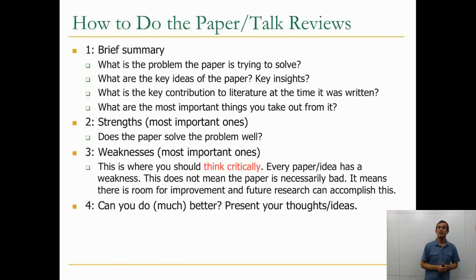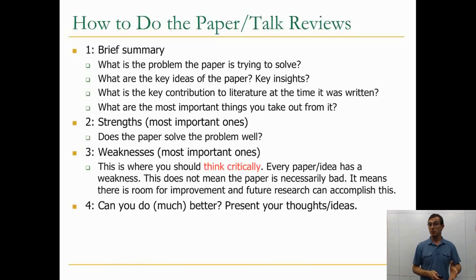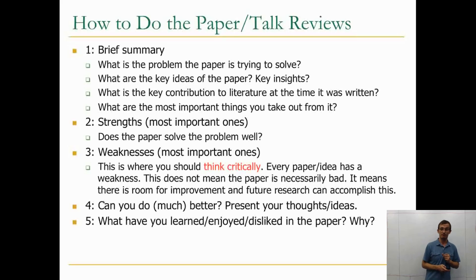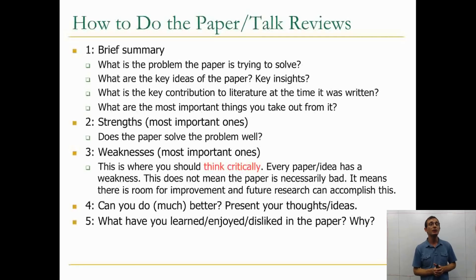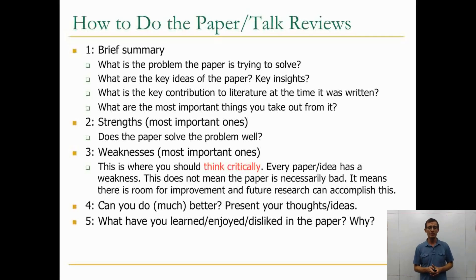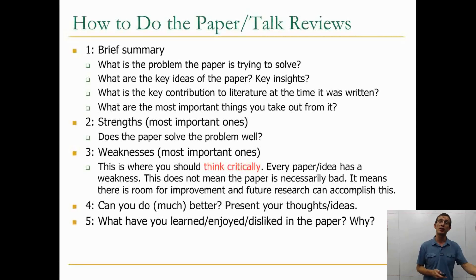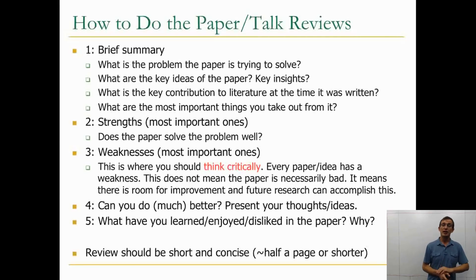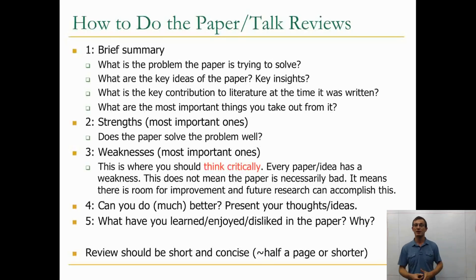The fourth part of the review asks: can you do much better? Present your thoughts and ideas — maybe there's a better solution you came up with after reading the paper. The fifth part is what you learned, enjoyed, or disliked in the paper. This is more qualitative, but it could potentially determine your direction in the research project. The review should be short and concise — half a page or shorter.